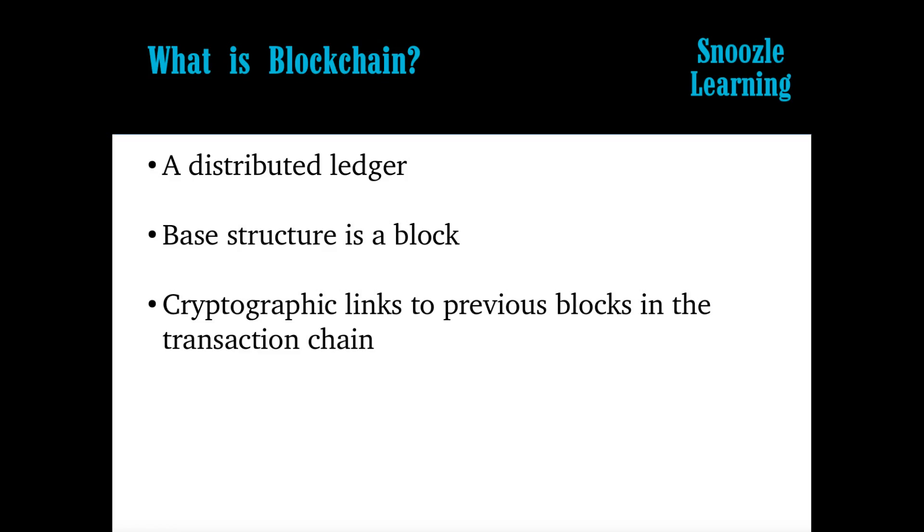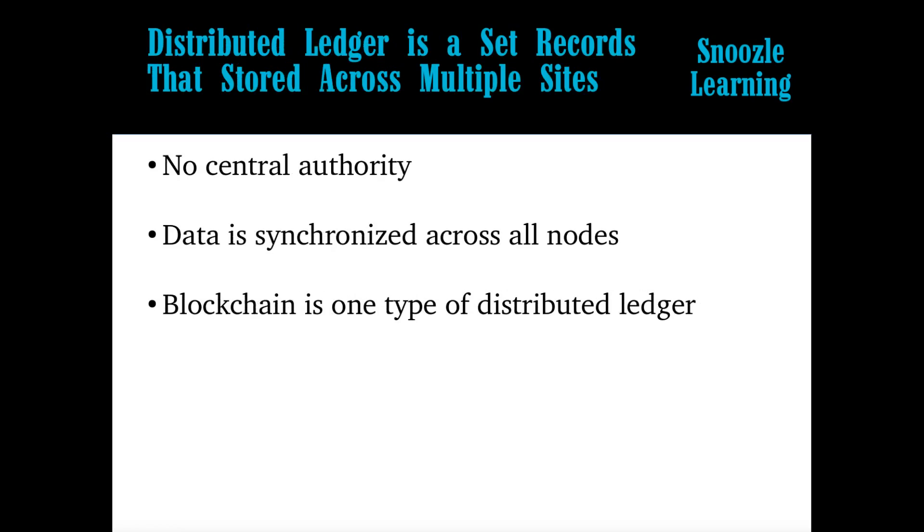And so that's basically what we'll be going over for today. So the first thing I want to start off is just describing what a distributed ledger is. So a distributed ledger is a set of records that are stored across multiple sites. So for something like GitHub or like a website, you have a central authority. You have a server and then it's connected to your home computer, basically that's on the edge as a client.